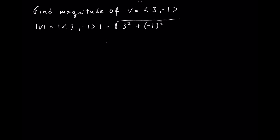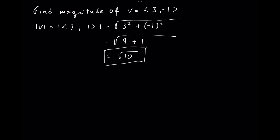This equals square root of 3 squared is 9, plus negative 1 squared is 1, which gives us square root of 10. And this is our solution.